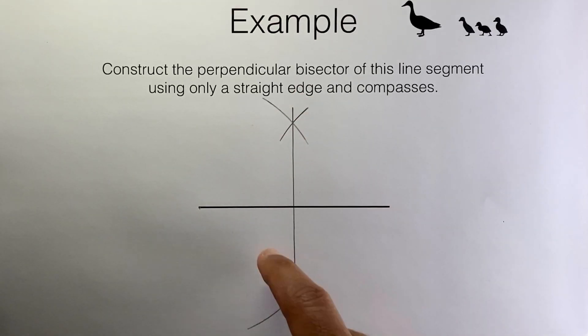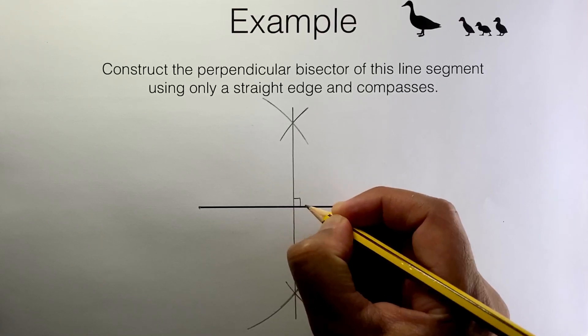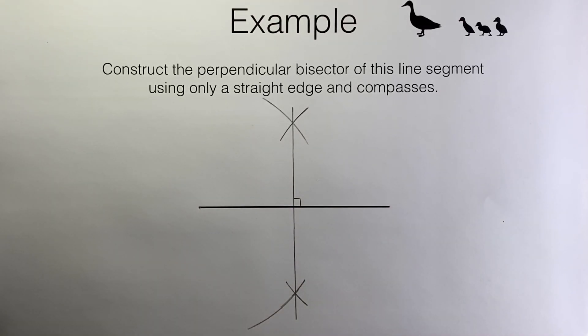That means that these are at right angles or at 90 degrees to each other. It also means that the original line segment gets cut in half right here. And we did this without measuring anything with a protractor or ruler. That's all there is to it.